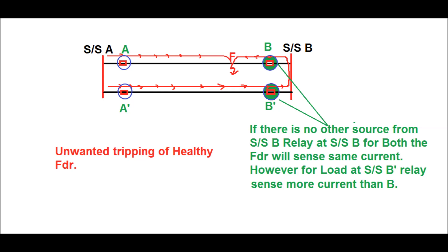This is not desirable for a transmission line. Our intent is to trip only the faulty section, that is the AB section, to clear the fault, and the other section, that is the A'B' section, should remain in uninterrupted power flow.